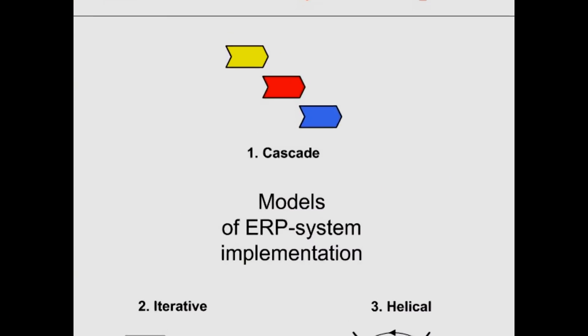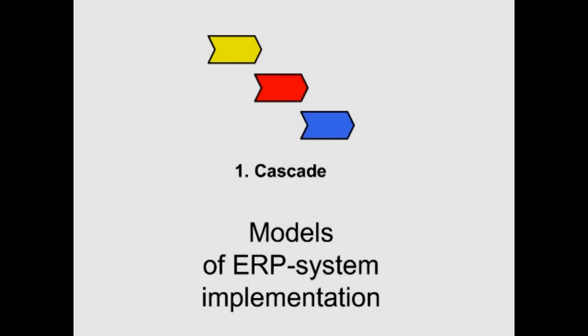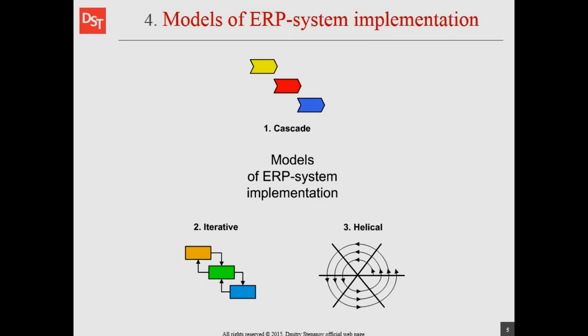An ERP system can be considered as a set of information systems integrated together with incorporation. Therefore, basic principles of information system design can be used to implement an ERP system. Is there only one cascade model of ERP system implementation? Definitely not.